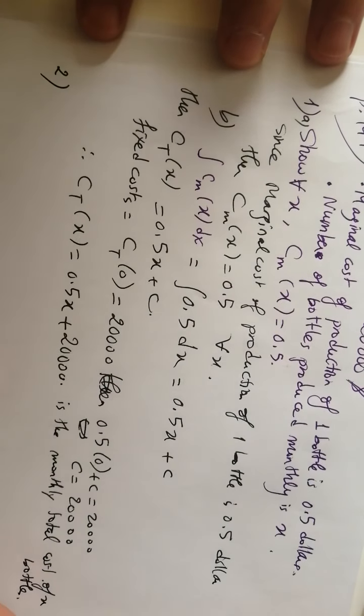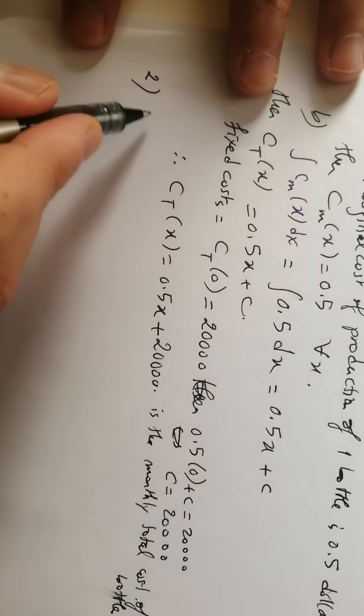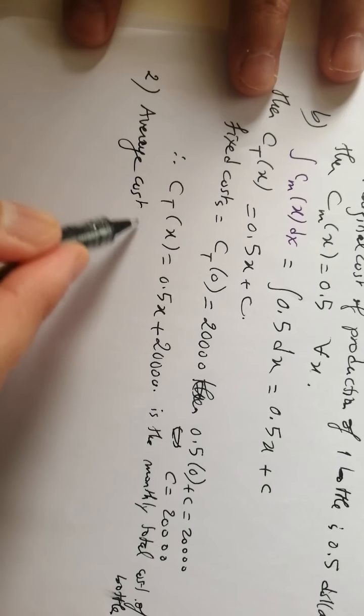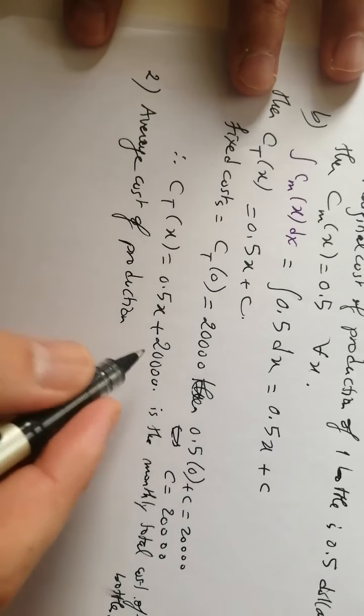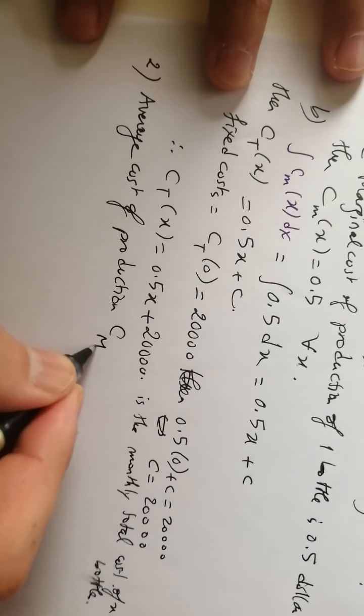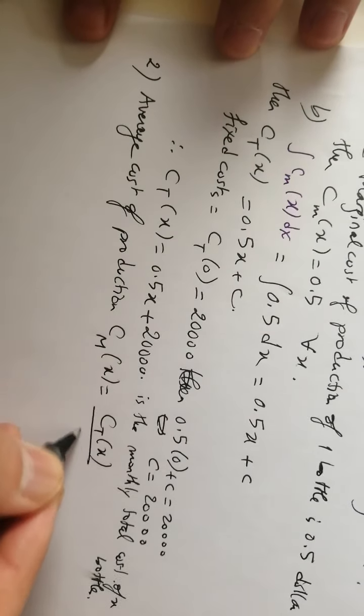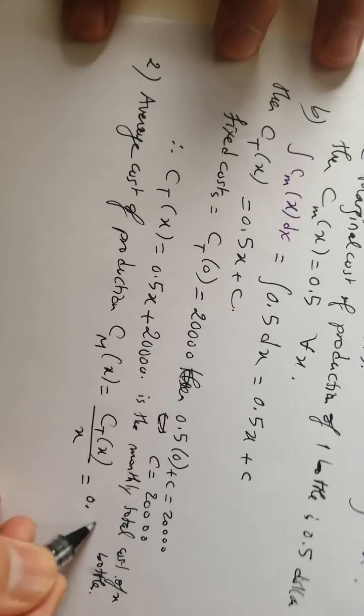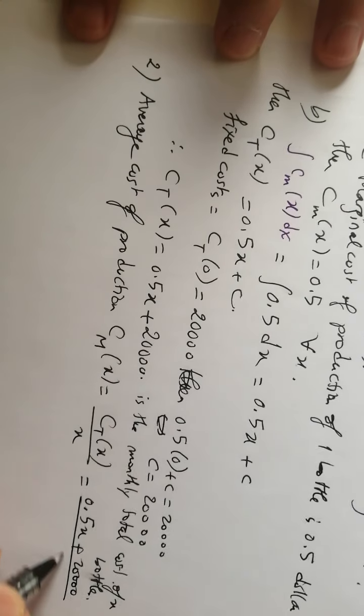Part 2: Determine the average cost of production. The average cost of production, capital M of x, equals CT of x over x. So this equals (0.5x plus 20,000) over x.